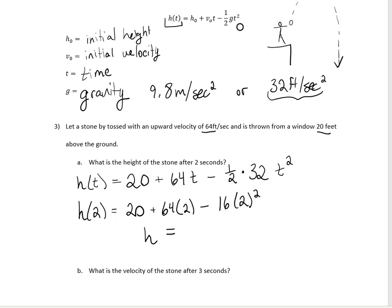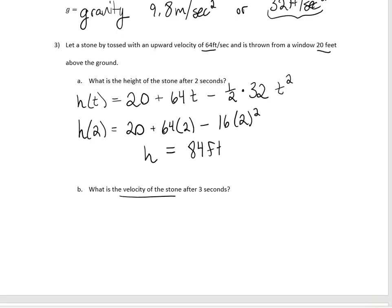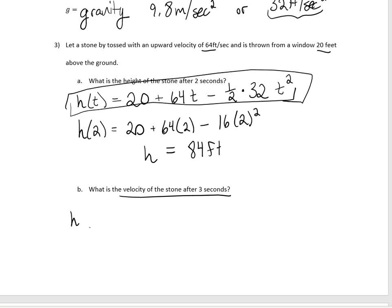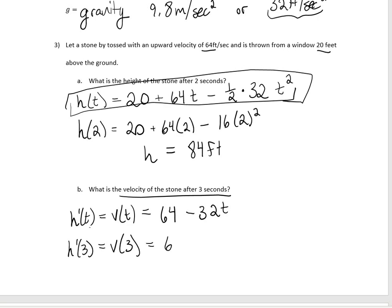To find the velocity, we take the derivative of the height function. h′(t) = 64 − 32t. To find the velocity after three seconds, we plug in t = 3: h′(3) = 64 − 32(3) = negative 32 feet per second.